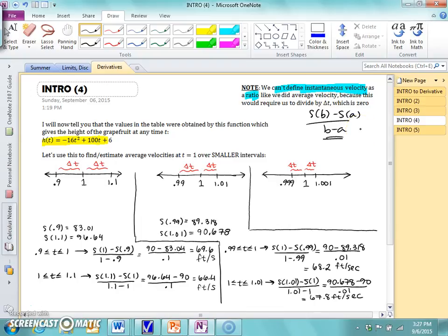Okay, so what we're going to do here is draw three number lines here. So pause, take a minute, and write this down, and then I'll explain it when you unpause it. We're going to use this function to estimate the average velocity at t equals 1, using increasingly smaller and smaller intervals.